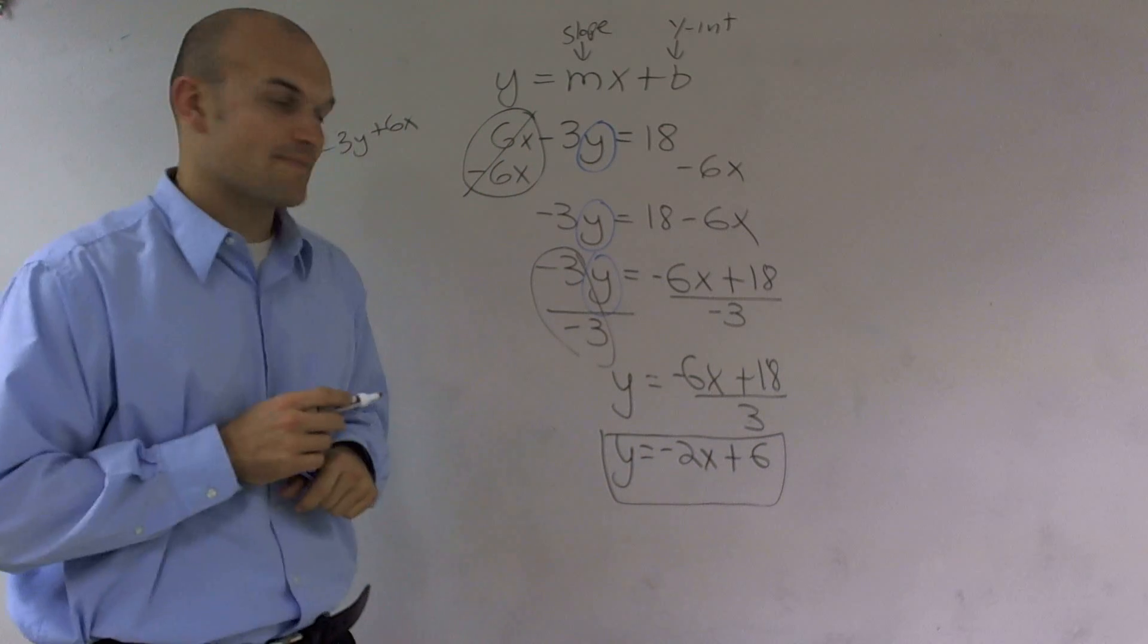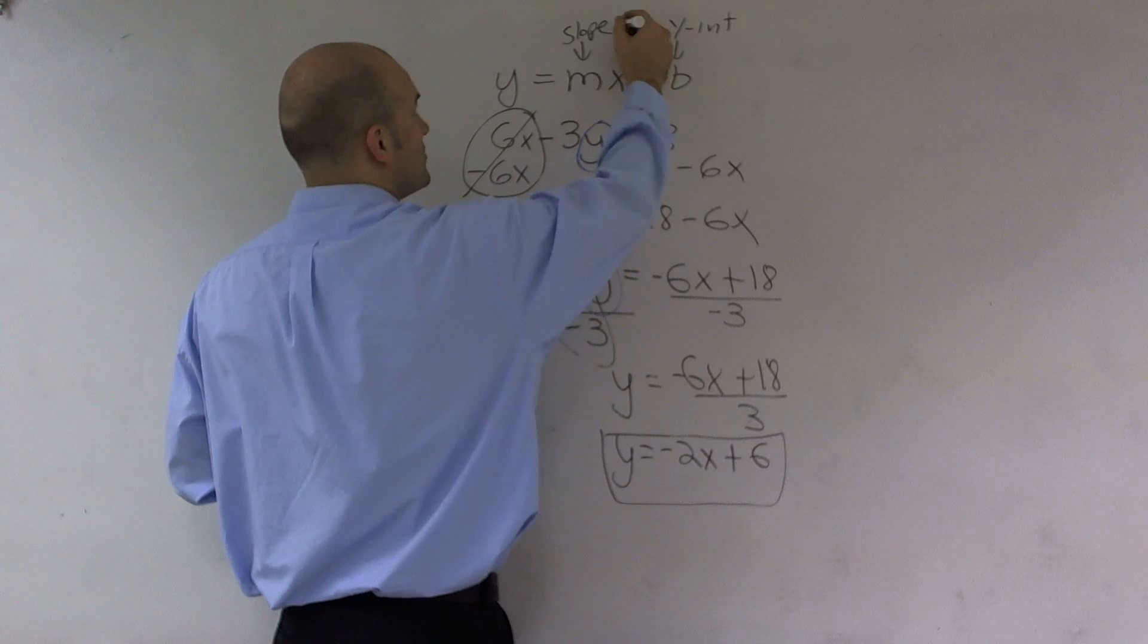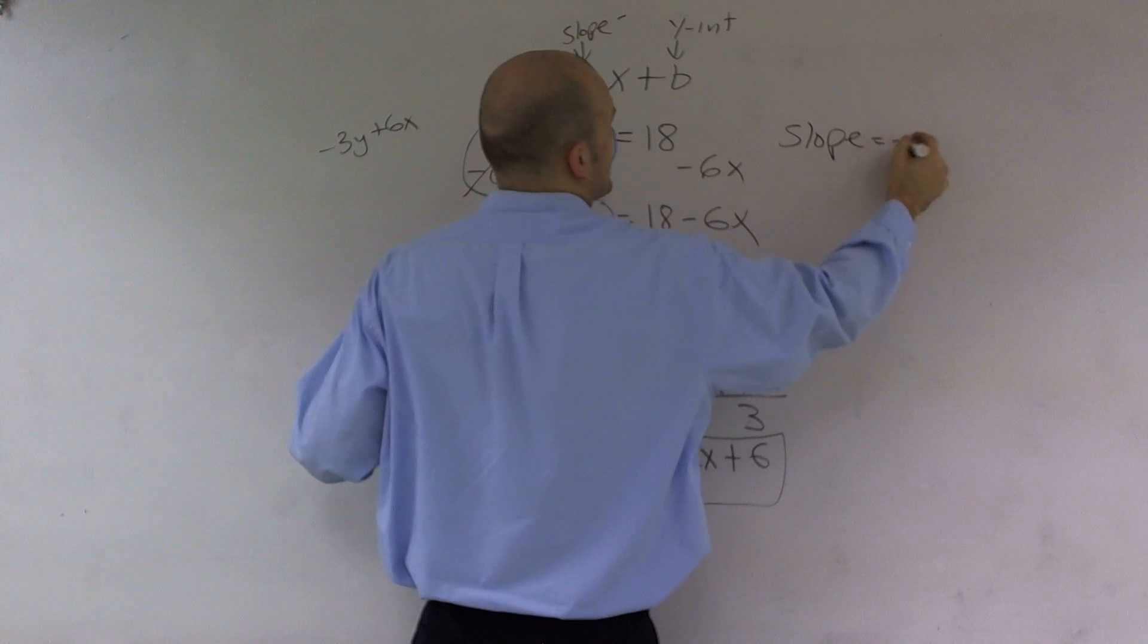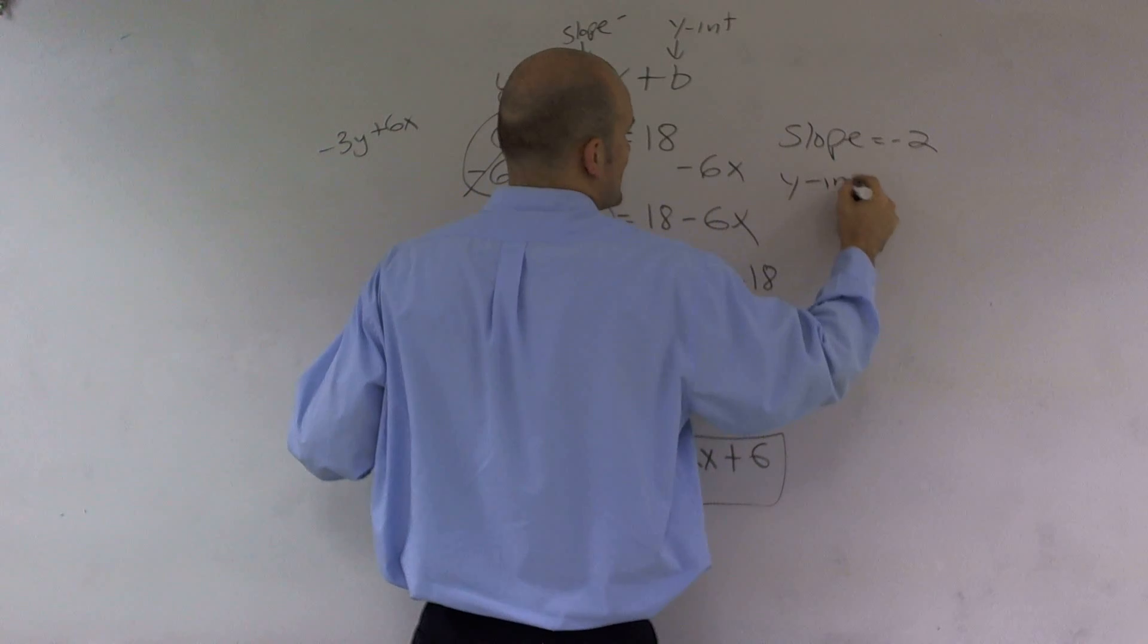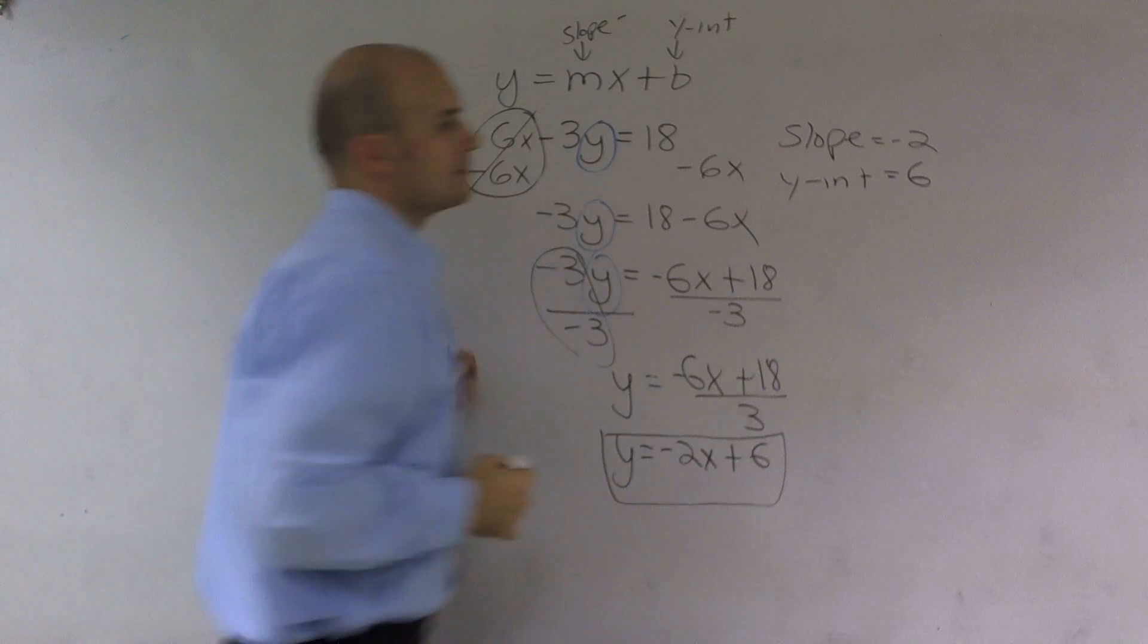Now that it is in y equals mx plus b form, I say that negative 2 is my slope. So I can just write slope equals negative 2. And my y-intercept, which is b, is 6. There you go.